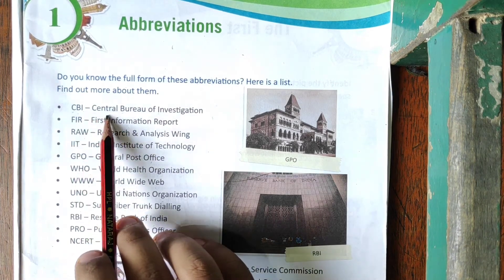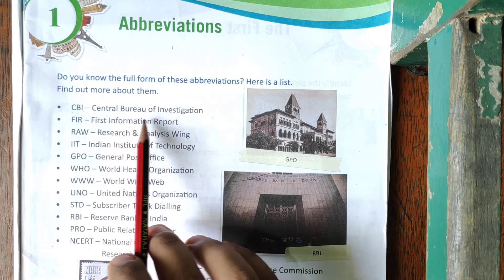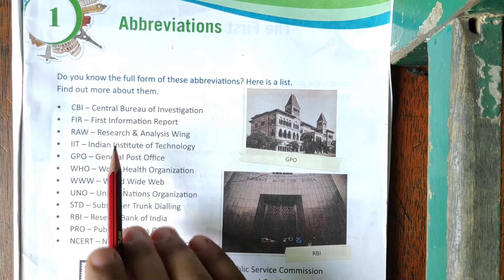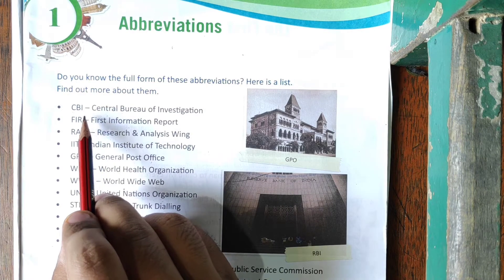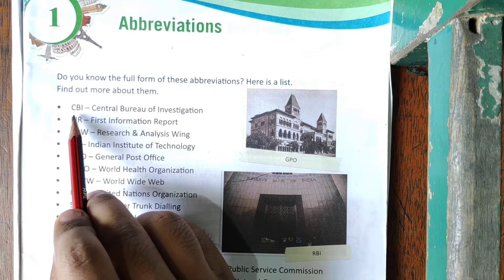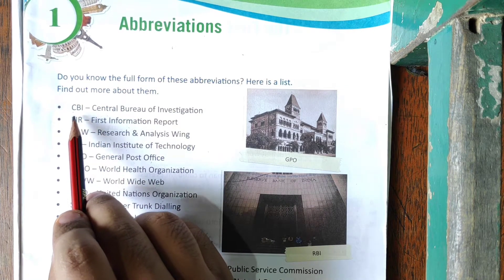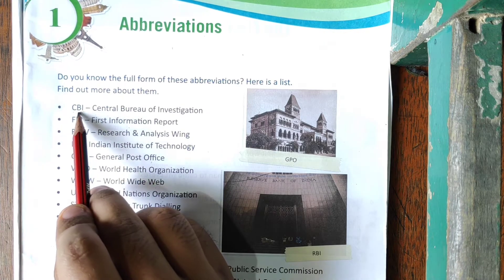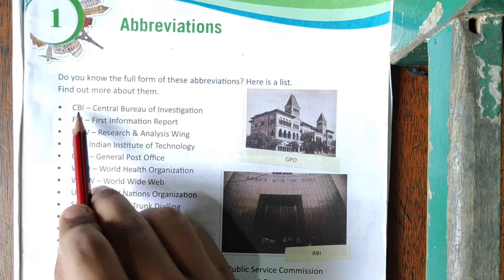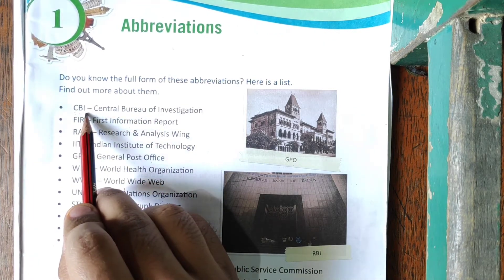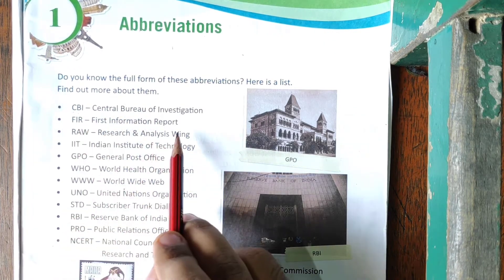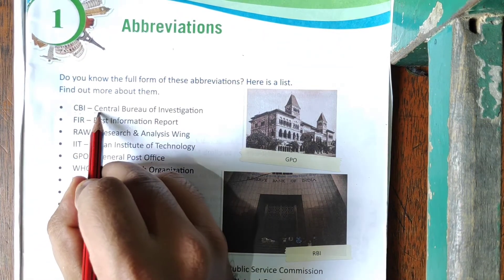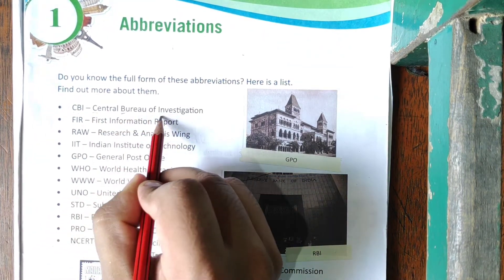First one is CBI — Central Bureau of Investigation. In these full forms you have to be very careful about the capital words according to the short forms given on the left side. C: Central, capital word C. Bureau: B capital word. And I: Investigation, as you can see. So these capital letters you have to be very careful about.